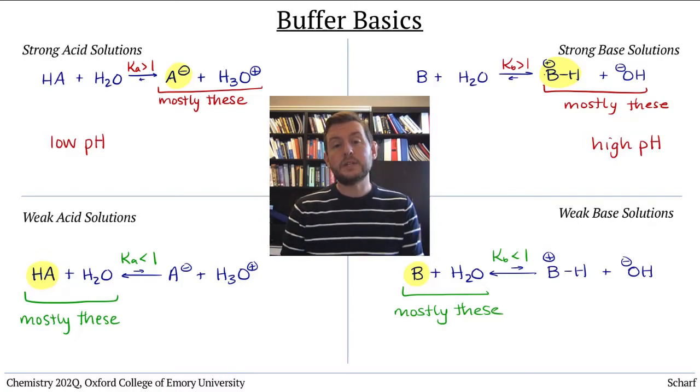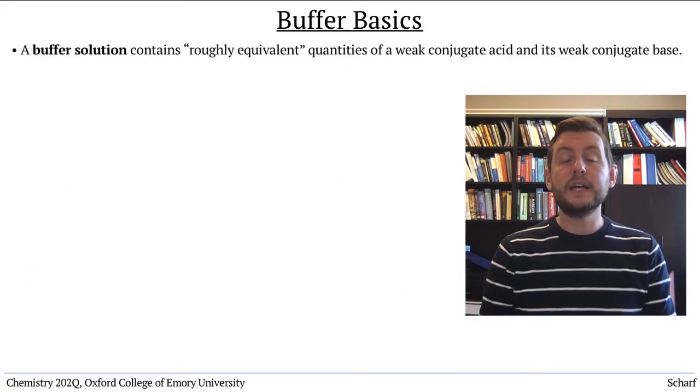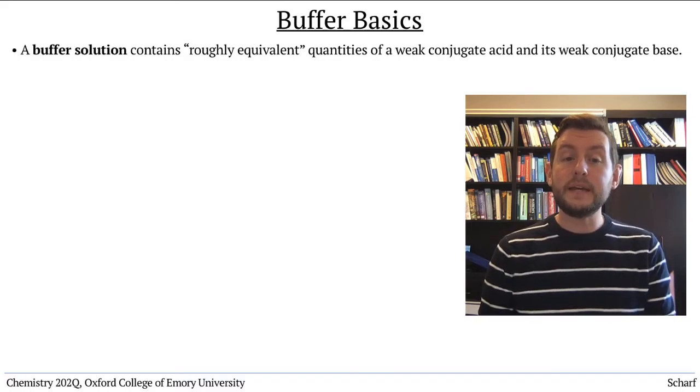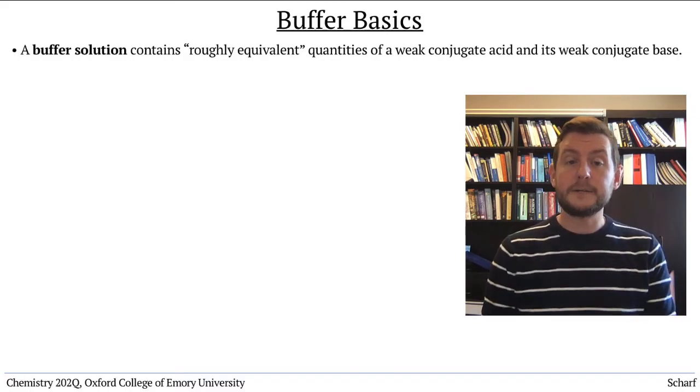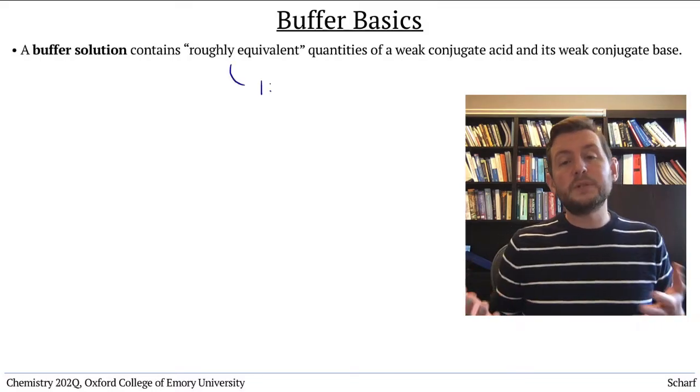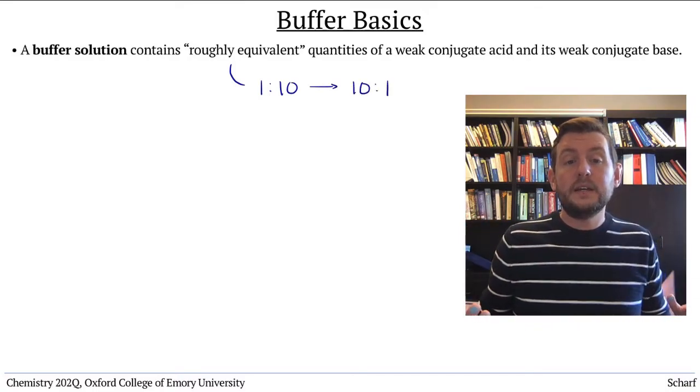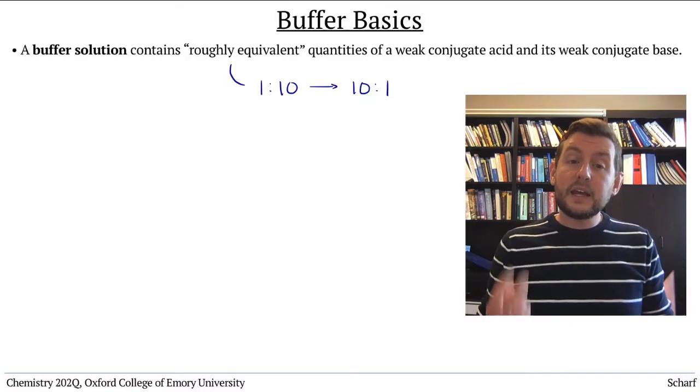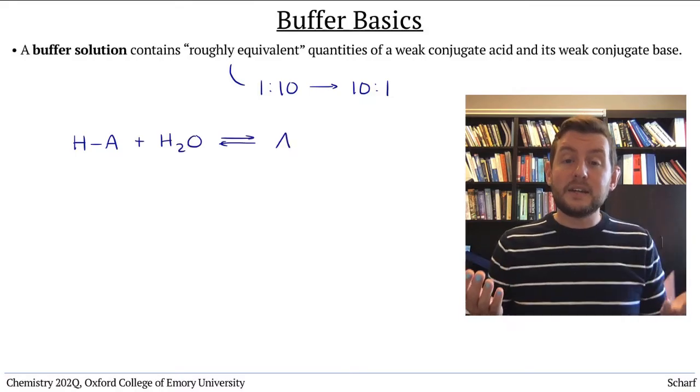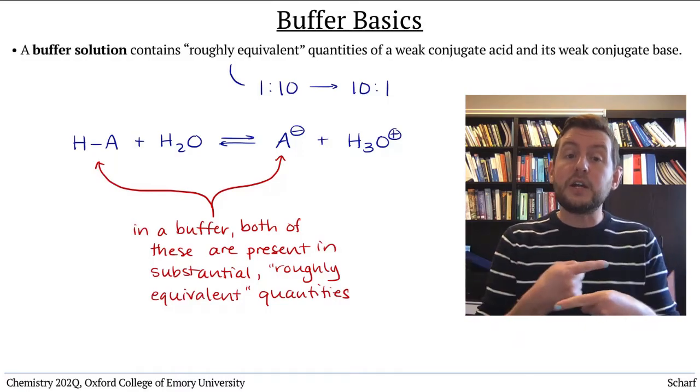To accomplish this, we use buffers. A buffer is a solution containing roughly equivalent quantities of a weak acid-weak base conjugate pair. When I say roughly equivalent, I generally mean ratios between about 1 to 10 and 10 to 1. These solutions contain two major components, both a weak acid and a weak base, which are in equilibrium with each other because they are conjugates of each other.